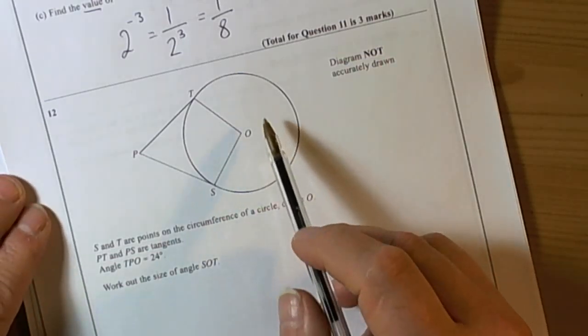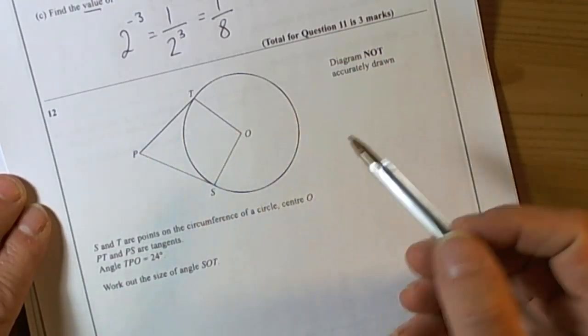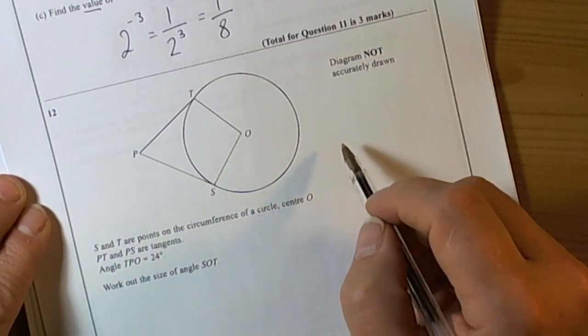So a question here involving a circle and missing angles, so we need to remember our circle theorems.